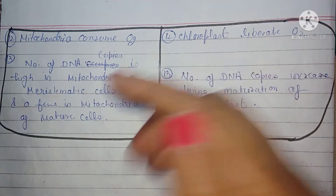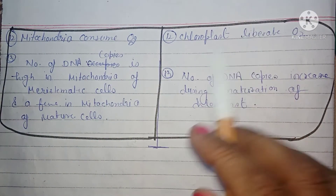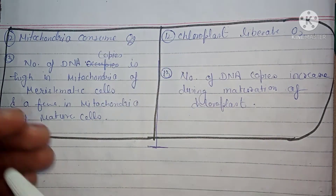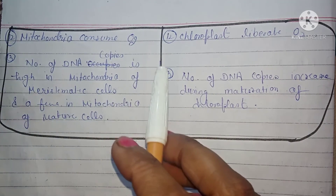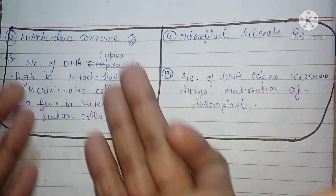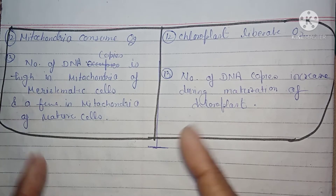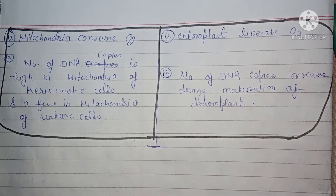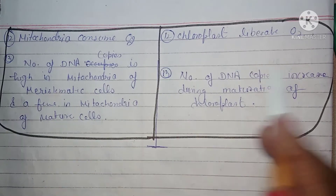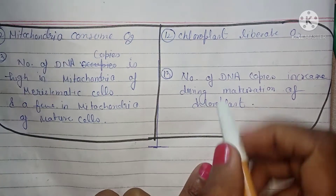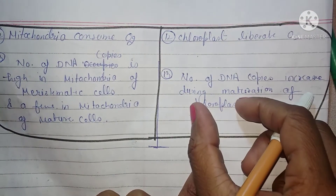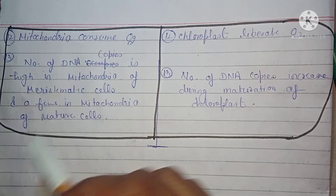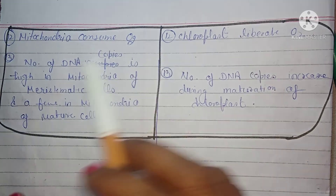Mitochondria oxygen consume karta hai, jabki chloroplast oxygen release karta hai. Mitochondria mein DNA ki high copies meristematic cells mein dekhne ko milti hain, aur few mitochondria mature cells mein hote hain. Chloroplast ke DNA copies maturation phase ke dauran increase hoti hain — during the maturation of chloroplast, number of DNA copies increase hoti hain.